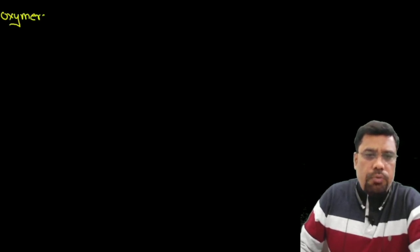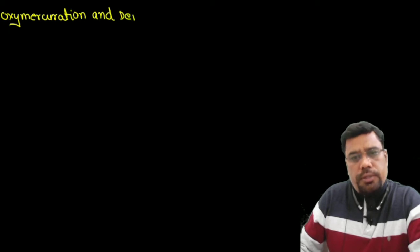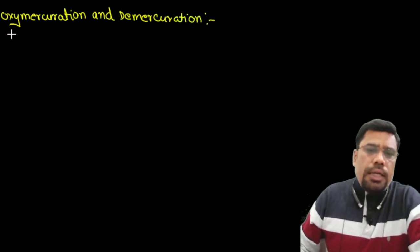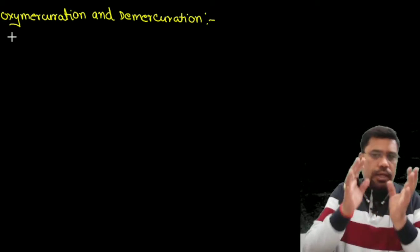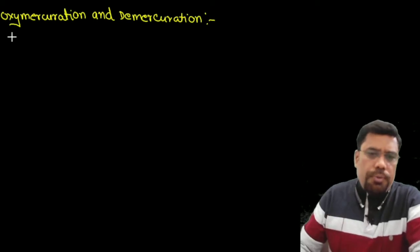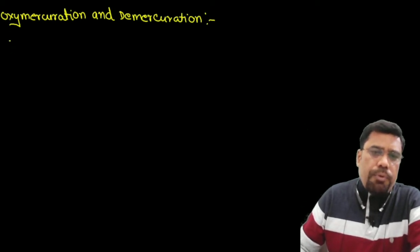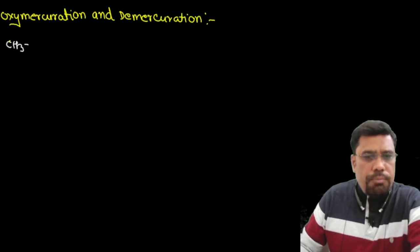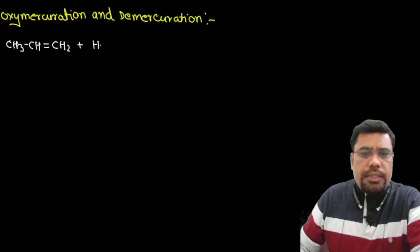अब हम लोग oxymercuration-demercuration reaction discuss करते हैं। यह दूसरी reaction है जो अब आप देखेंगे। नाम ही बहुत कुछ बता रहा है — एक बार mercuric acetate जुड़ेगा और दूसरी बार हटेगा। इस reaction को propene या ethene दोनों से चला सकते हैं, लेकिन propene वाली reaction ज़्यादा पूछी जाती है।